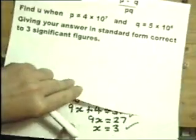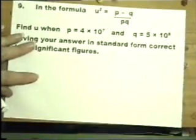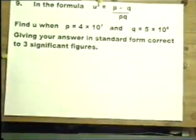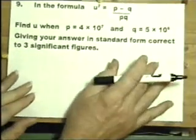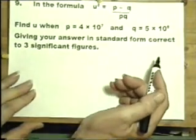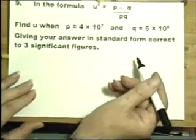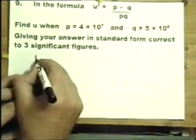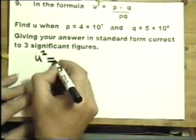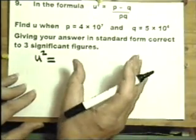Question 9. We've got a formula that says u squared equals p minus q over p multiplied by q. And we're told what p and q are. Calculator paper. So this really is seeing, can you use that calculator?